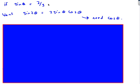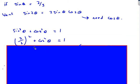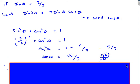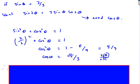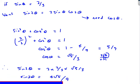Sin θ = 2/3 and we want sin 2θ = 2 sin θ cos θ, so we need cos θ. Using sin²θ + cos²θ = 1, cos²θ = 5/9, so cos θ = √5/3 (positive, since the angle is acute). Therefore sin 2θ = 2 × (2/3) × (√5/3) = 4√5/9.